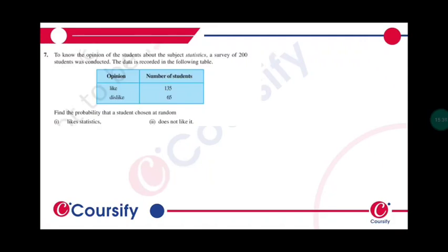Question number 7: To know the opinion of the students about the subject statistics, a survey of 200 students was conducted. The data is recorded in the following table. Find the probability that a student chosen at random likes statistics.